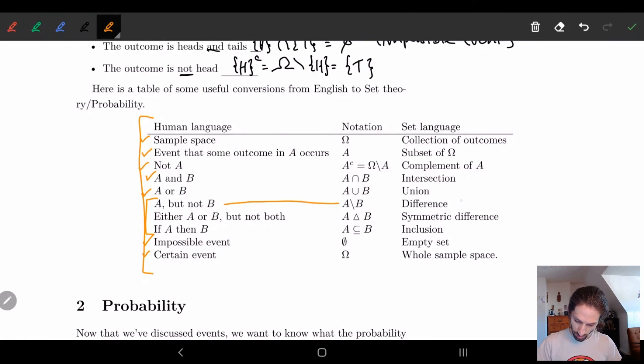Then we have either A or B, but not both. This is called the symmetric difference. And then if A then B, this is just inclusion. So if it's in A and it must be in B, well, A must be a subset of B. So that's it for this little talk. We'll talk about probability in the next video. Thanks.